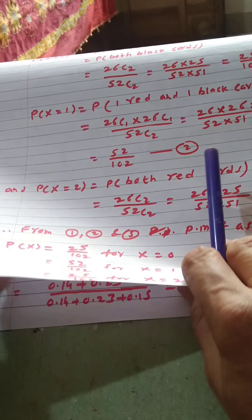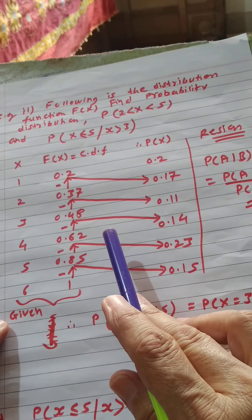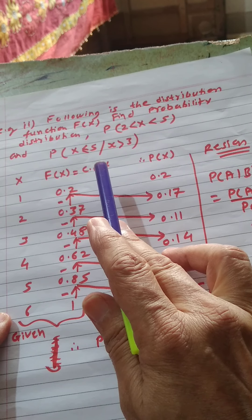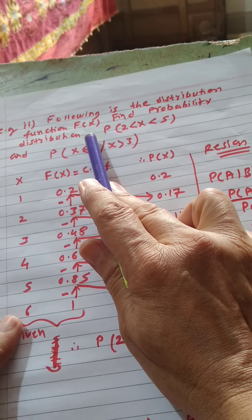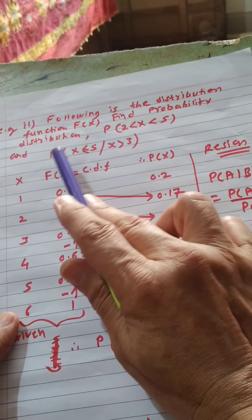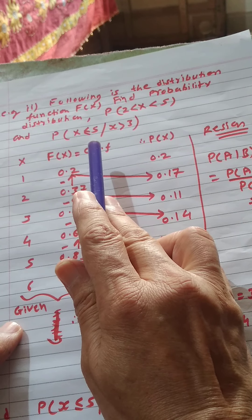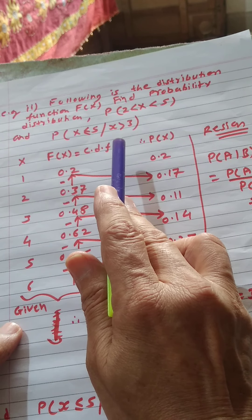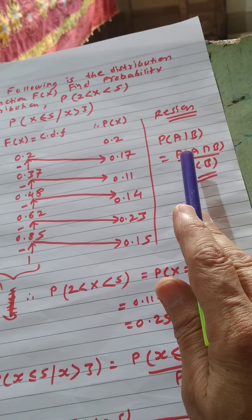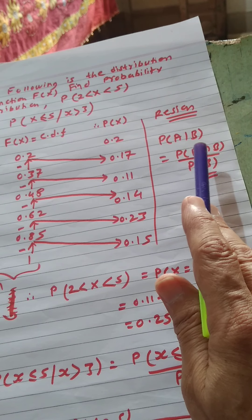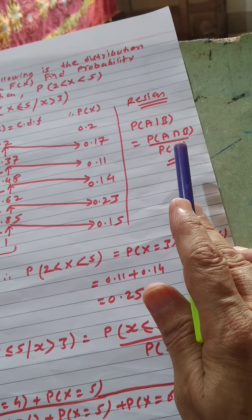The probability for X=2 — both red cards drawn from 26 red cards — is 26C2 divided by 52C2, which equals 26×25 divided by 52×51. Again, 2 factorial cancels, giving 25 by 102. From these three results, the PMF is: P(X) = 25/102 for X=0, 52/102 for X=1, and 25/102 for X=2.